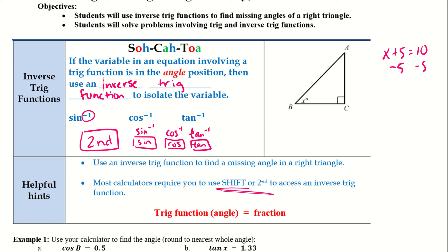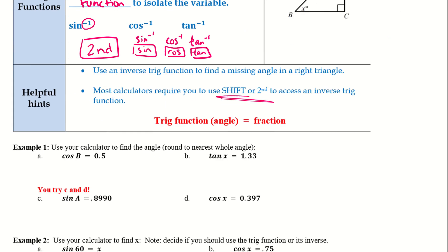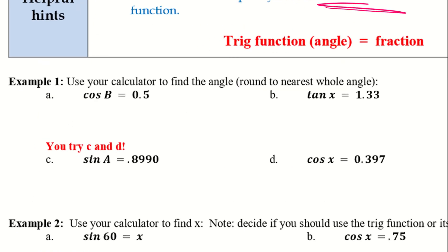Some calculators might say shift. The ones at school have the second button in the top left corner. This is really important — if we had sine of x equals 4 over 5, we couldn't just divide out x to get it by itself. We would have to use that inverse trig function. We can't just divide it out.